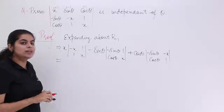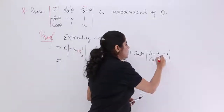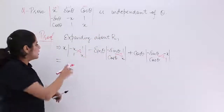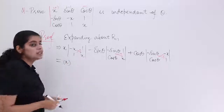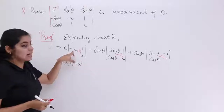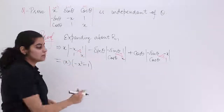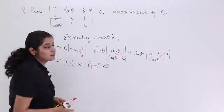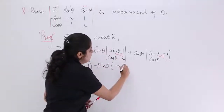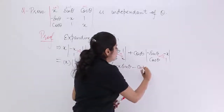Next step is cross multiplication. We started with a 3 by 3 determinant and have obtained three 2 by 2 determinants. Now x is outside and remains. Inside: x into x is x squared, minus 1 into 1 is 1, so it is x squared minus 1. Outside is minus sin theta. Inside: minus sin theta into x is minus x sin theta, minus cos theta into 1 is cos theta.